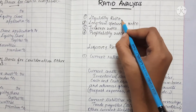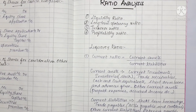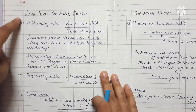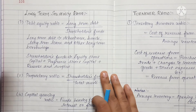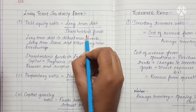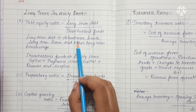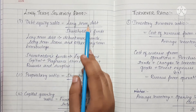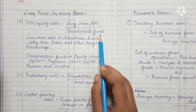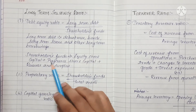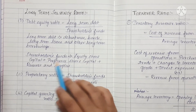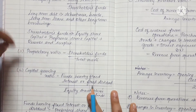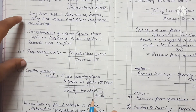Now let's look at Long Term Solvency Ratios. There are 3 ratios: Debt Equity Ratio, Proprietary Ratio, and Capital Gearing Ratio. Debt Equity Ratio equals Long Term Debt divided by Shareholders Fund. Long Term Debt includes Debentures, Bonds, Long Term Loans, and Other Long Term Borrowings. Shareholders Fund includes Equity Share Capital, Preference Share Capital, plus Reserves and Surplus.